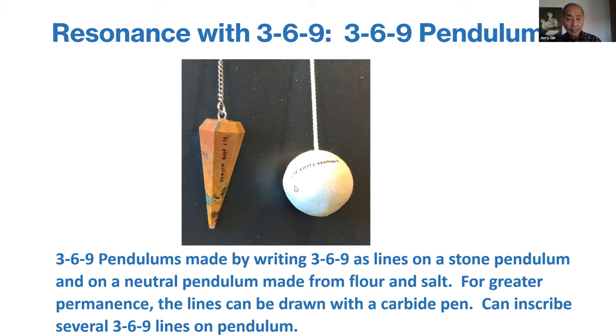You have a pendulum—my flour salt-dough ball as a neutral pendulum. You can just write three lines, six lines, nine lines, and it will now resonate with the energy of 369 or resonate with the energy of the torus. Here's another structure—not a precious stone, just a stone. I engrave with a carbide pen 369 on it a couple of times around the pendulum.